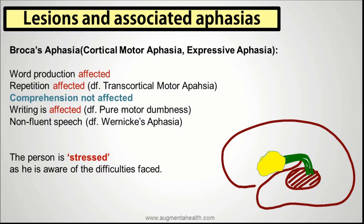It's important to remember small differences between various aphasias, especially when answering multiple choice questions. The important difference between transcortical motor aphasia and Broca's aphasia is whether repetition is affected or not — in Broca's aphasia repetition is affected, whereas in transcortical it is not. Writing is affected in Broca's aphasia, whereas in pure motor dumbness writing is not affected. Broca's aphasia shows non-fluent speech, whereas in Wernicke's aphasia you see fluent speech.